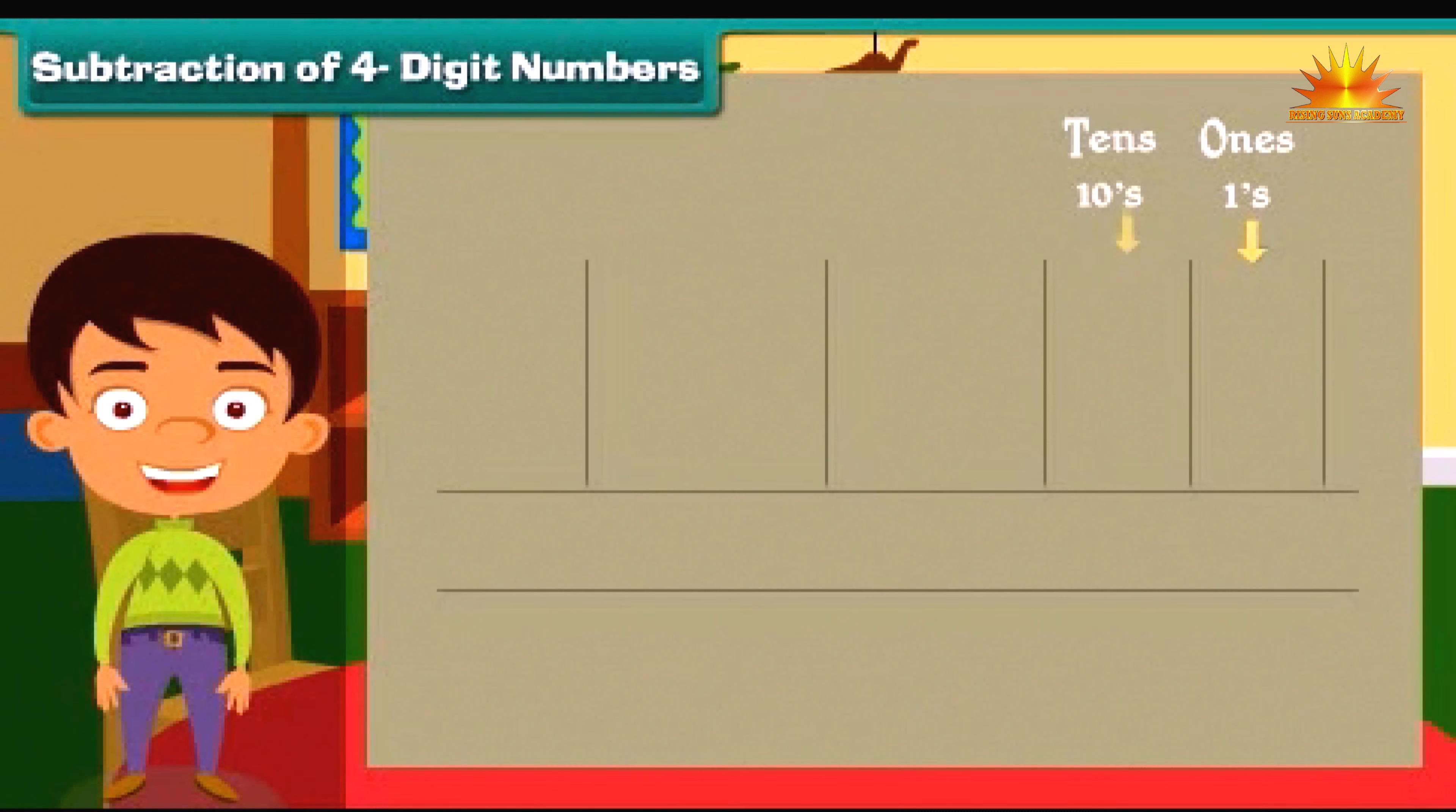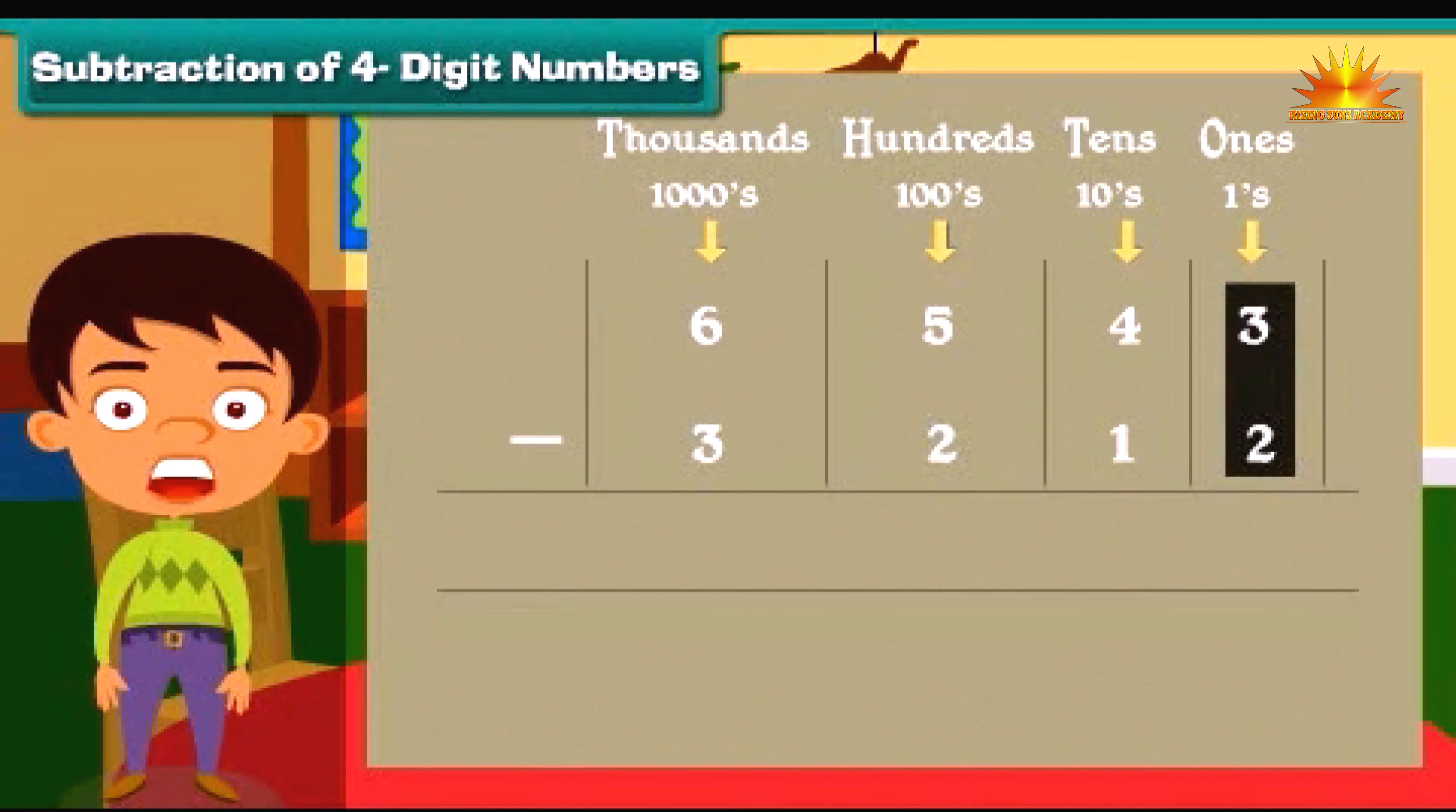We start subtraction from one's column. Three minus two is equal to one. Subtract tens. Four minus one is equal to three.